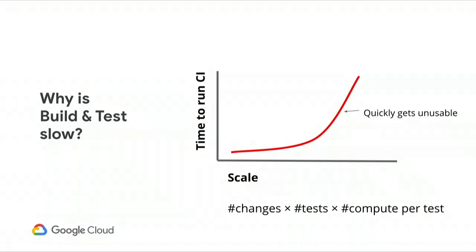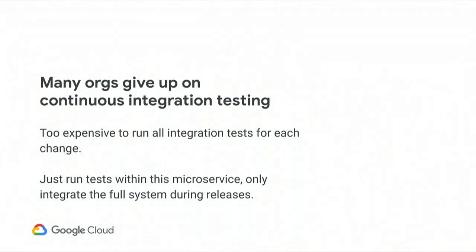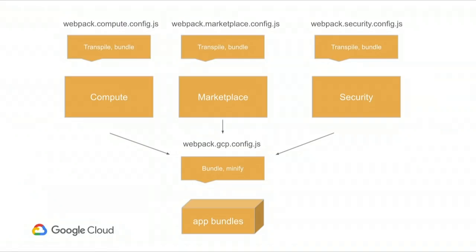As your project becomes larger, each individual integration test requires a ton of compute power, just for a single one. So it starts to become very quickly infeasible to run all of your tests on every submit. Many organizations tend to give up on integration testing, and instead break up their projects into a number of microservices, where each service is responsible for its own set of tests. Those will run on every submit, and you'll only ever run your substantial integration tests when you attempt to release. This means that when you're releasing, that's the first time you're going to encounter problems with the interaction between these different microservices that have been working separately.